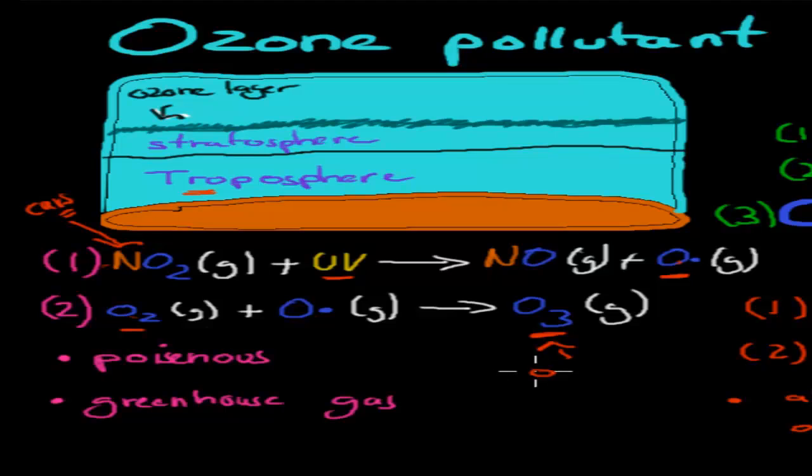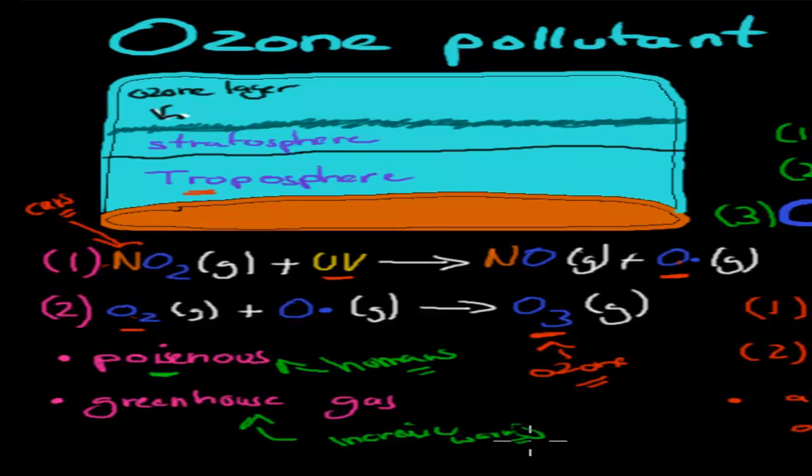That's ozone, and that's how ozone is formed in the lower atmosphere, in the troposphere. The problem is in the lower atmosphere it's poisonous for humans. Remember, the troposphere is where all the humans and animals live, so it's not good for us. It can also act as a greenhouse gas, which means it can increase warming. That would not be good overall.